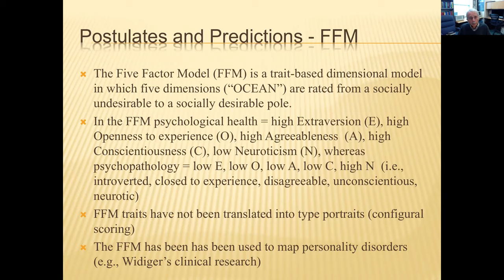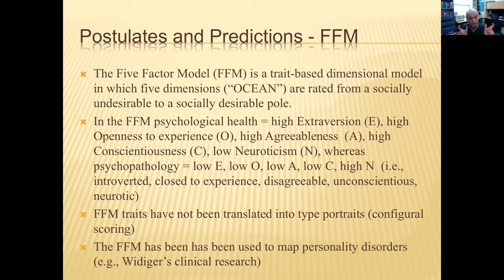The Myers-Briggs has an advantage over the five-factor model. In the five-factor model, traits are rated from a socially undesirable pole to a socially desirable pole. In the MBTI, both poles are equally socially desirable — they're just different. In the five-factor model, psychological health means high extroversion, high openness, high agreeableness, high conscientiousness, and low neuroticism, while psychopathology is the opposite: introverted, closed to experience, disagreeable, unconscientious, and neurotic.